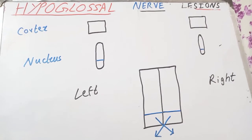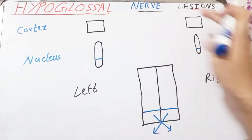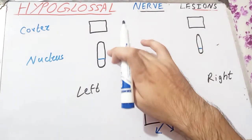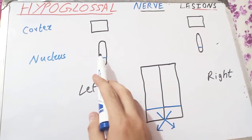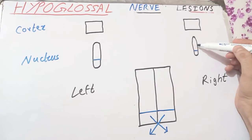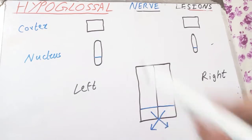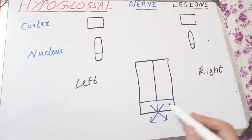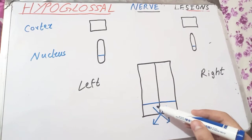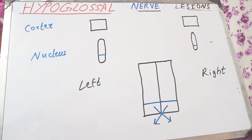Now let's talk about the upper motor neuron lesion — or supranuclear lesion — of the hypoglossal nerve. The cerebral cortex of the left and right sides and the hypoglossal nuclei of both sides are drawn here. The upper portion of the hypoglossal nucleus receives innervation for all the muscles of the tongue except the genioglossus, and the lower portion innervates the genioglossus muscle. The left-sided genioglossus contracts unilaterally to pull the tongue toward the right side, and vice versa.